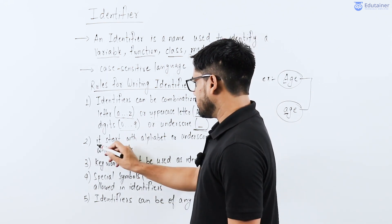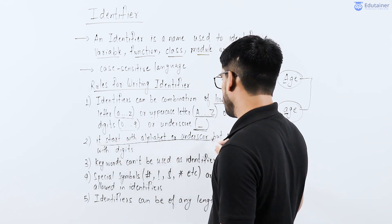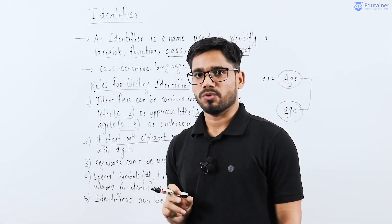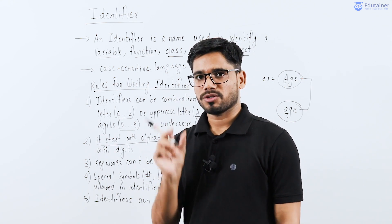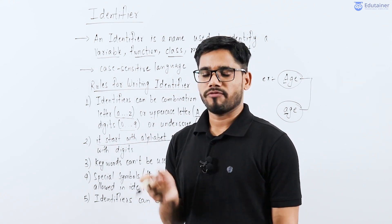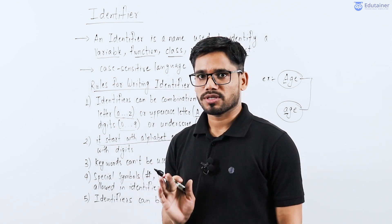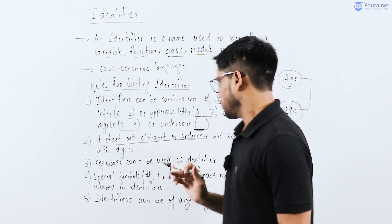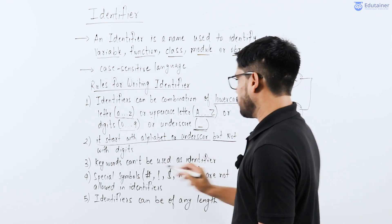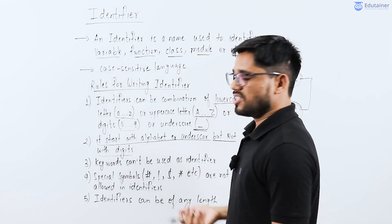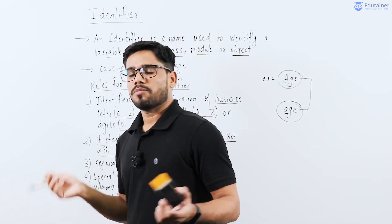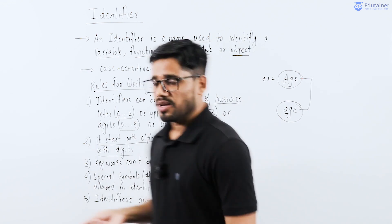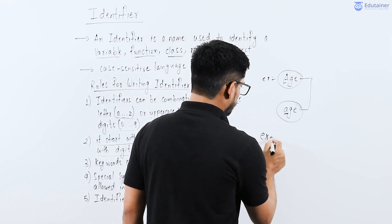Second rule is that identifiers start with an alphabet or underscore. When you start the name, the first letter must be an alphabet — either lowercase or uppercase — or an underscore. But you cannot start with digits. So the first letter must be an alphabet or underscore, but not a digit.